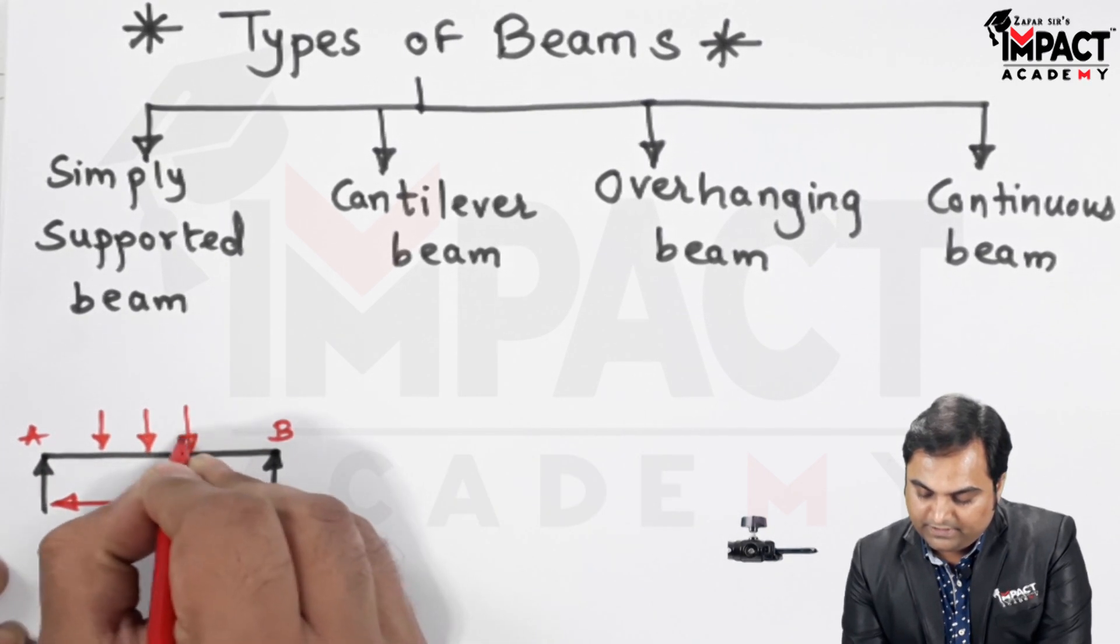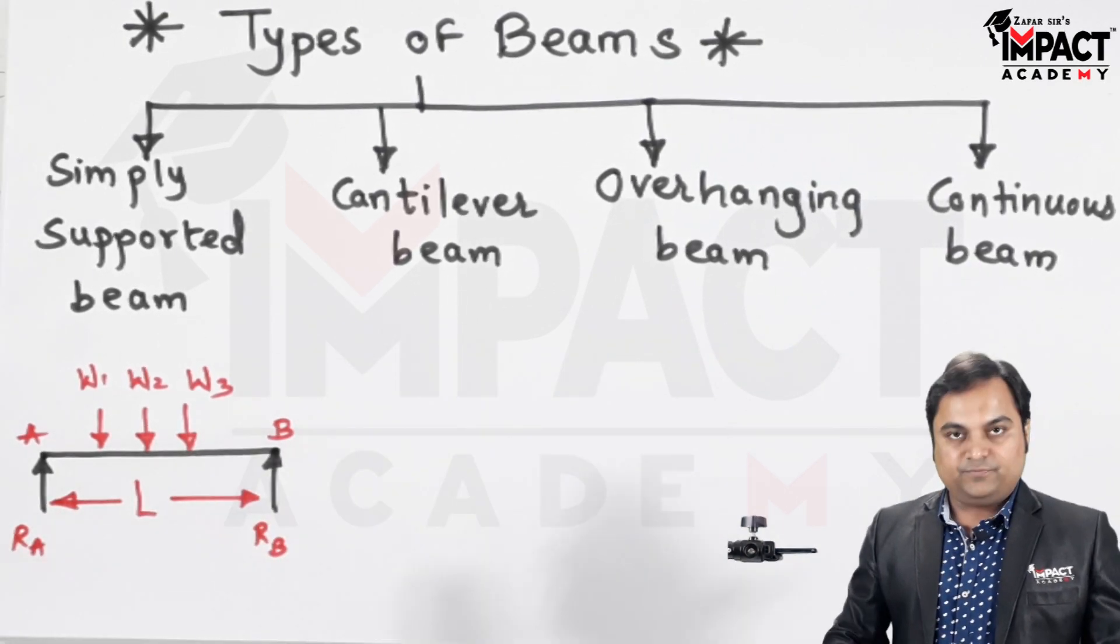When it is simply supported beam, the entire length of the beam is supported. I will show with the help of diagram just over here. Now, the entire length of the beam, which is capital L, is supported at points A and B. Then, under the action of different loads like W1, W2 and W3, the reactions are offered at A and B respectively. So, this is a simply supported beam where the entire length is supported between the two extreme supports.